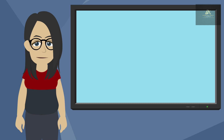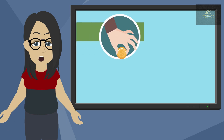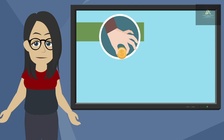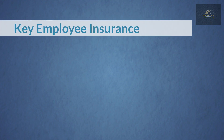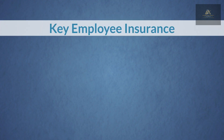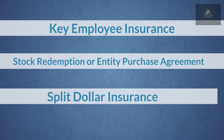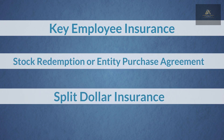Therefore, when a business pays the premiums for any of the following arrangements, the premiums are not deductible: key employee insurance, stock redemption or entity purchase agreement, and split dollar insurance.